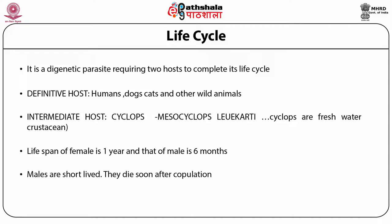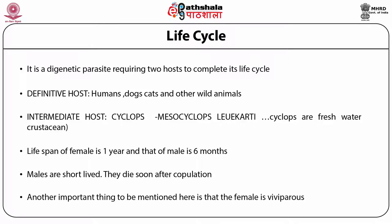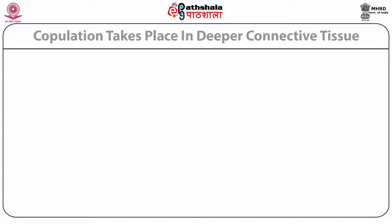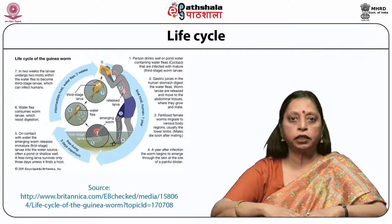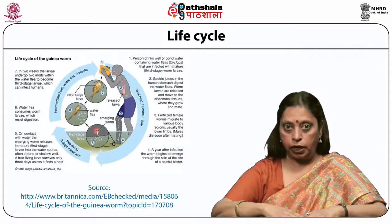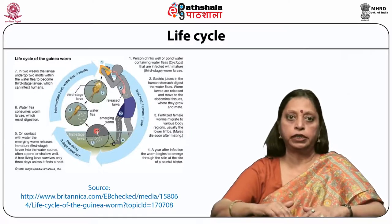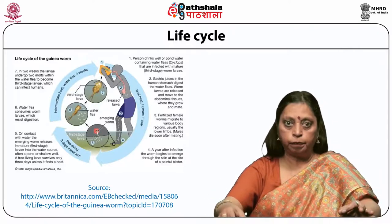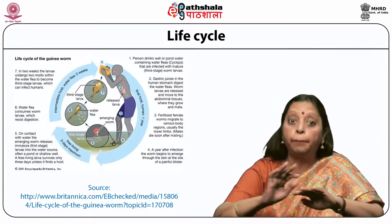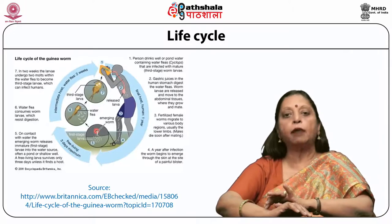The female is viviparous. Copulation takes place in deeper connective tissues. During copulation, the male orients itself so that the male gonopore coincides with the female gonopore. Spicules, gubernaculum and genital papillae help the male in opening the vulva and transferring sperm. Life cycle starts with the development of young worms within the body of the female. When the young are ready to emerge, the female comes beneath the surface of the host's skin to release them in water. The female produces a toxin that forms a blister on skin that regularly comes in contact with water.